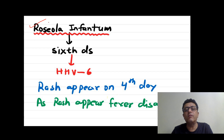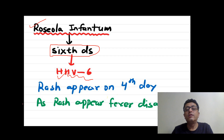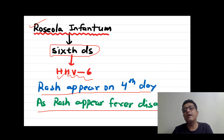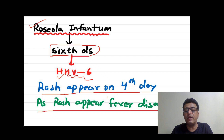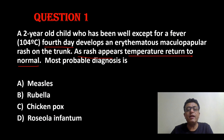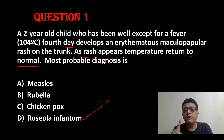It is Roseola infantum, also known as sixth disease, caused by human herpesvirus type 6. The classical point: rash appears on the fourth day, and as rash appears, fever disappears. Contrast this with measles — fourth day rash, but as rash appears, fever shoots up. In Roseola infantum, rash appears on the fourth day and as rash appears, temperature returns to normal.